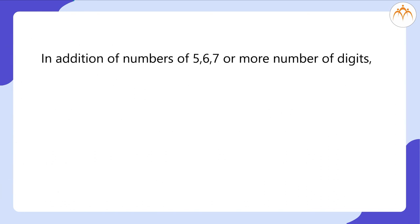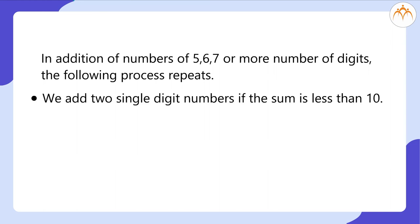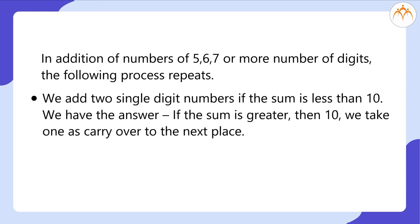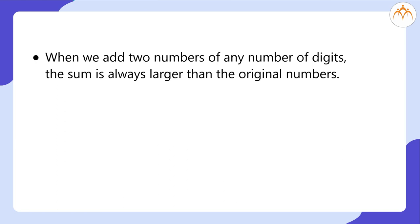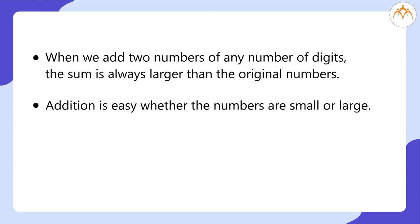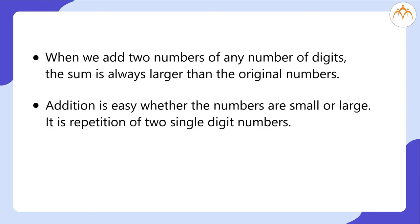What did we learn? In addition of numbers of 5, 6, 7, or more digits, the following process repeats: we add two single-digit numbers — if the sum is less than 10, we have the answer directly; if the sum is greater than 10, we take 1 as carryover to the next place. When we add two numbers of any number of digits, the sum is always larger than the original numbers. Addition is easy whether the numbers are small or large — it is always a repetition of adding two single-digit numbers.